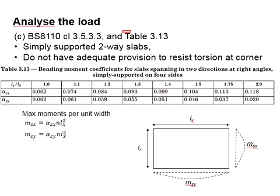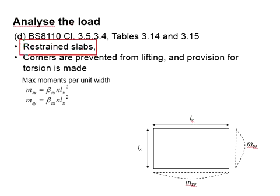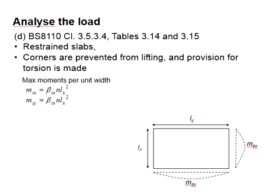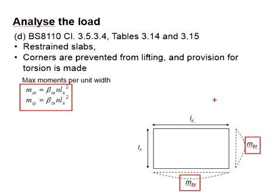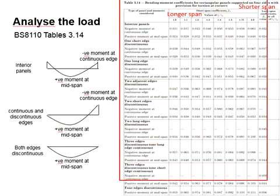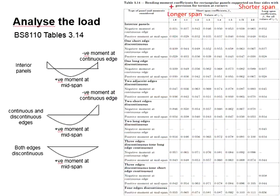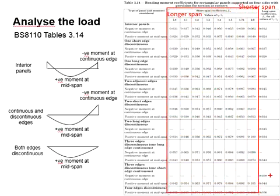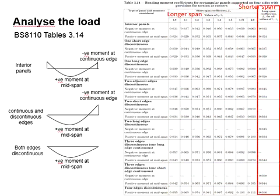Bear in mind that this table is meant for simply supported slabs with all four sides free. For restrained slabs, you may refer to Table 3.14 and 3.15. There will be factors to acquire and substitute into the equations to compute the moment at the shorter span and the longer span. In this typical Table 3.14 from BS, this section refers to the longer span and this section refers to the shorter span.